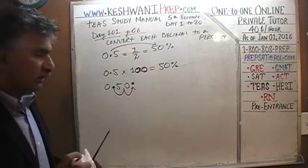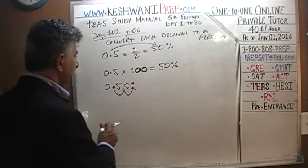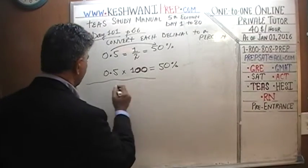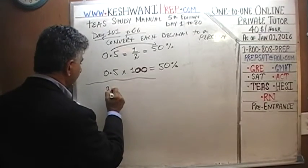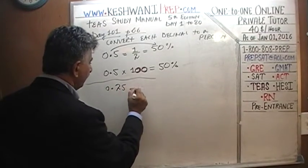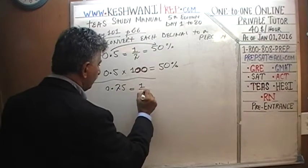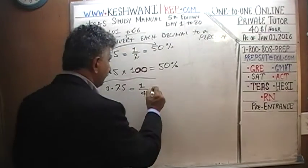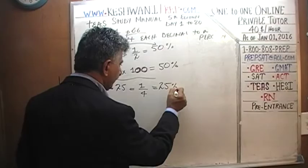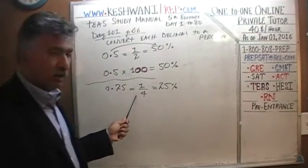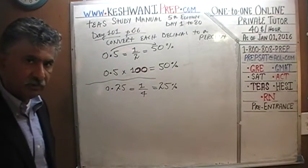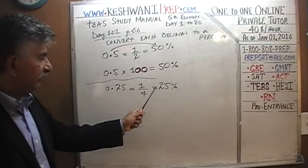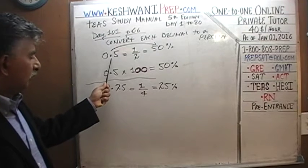Let's do one more. This time let's do 0.25. Everyone knows that 0.25 is one quarter, and a quarter of something is 25 percent. The question is how do we go from that decimal to the percentage?